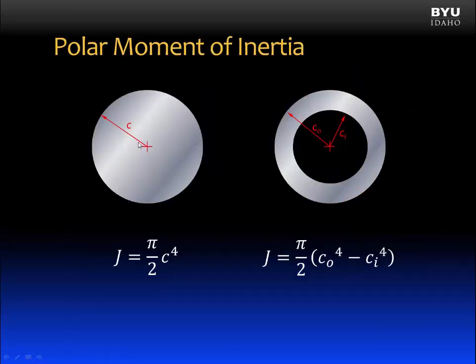J is the polar moment of inertia. For a solid circular cross-section, J is equal to pi divided by two times C to the fourth power. C is the radius. If we have a tubular cross-section, then J is equal to pi over half times the outer radius to the fourth power minus the inner radius to the fourth power.